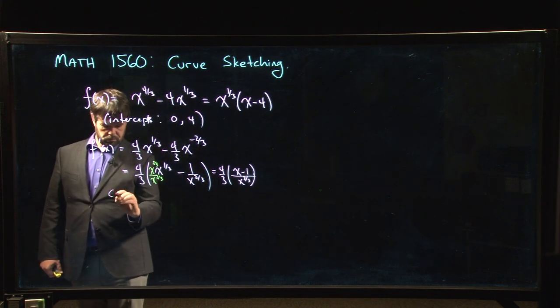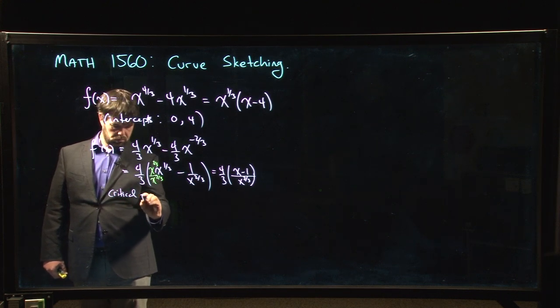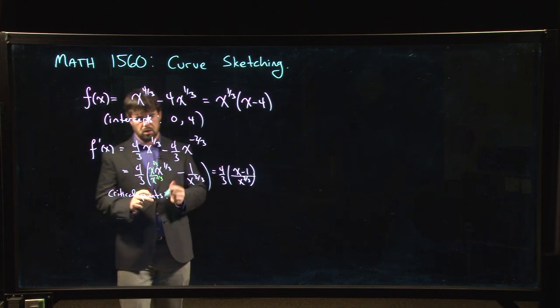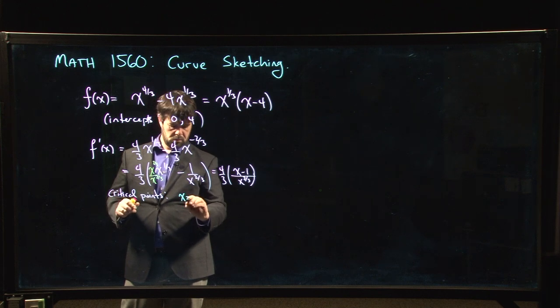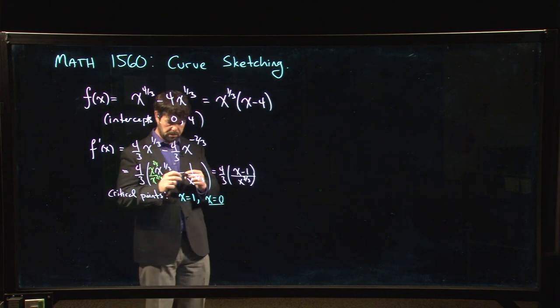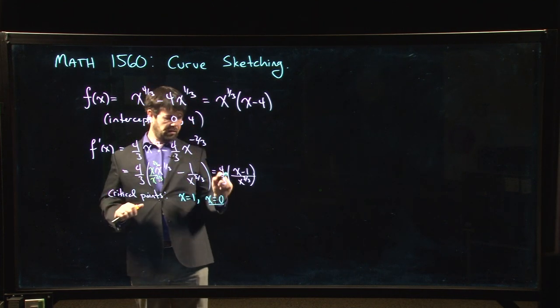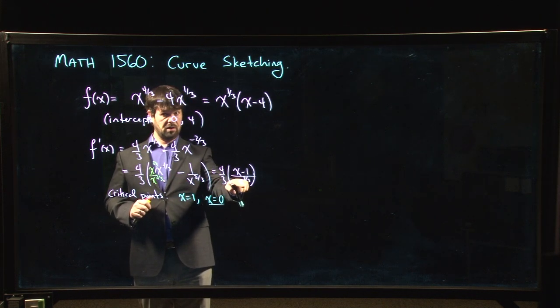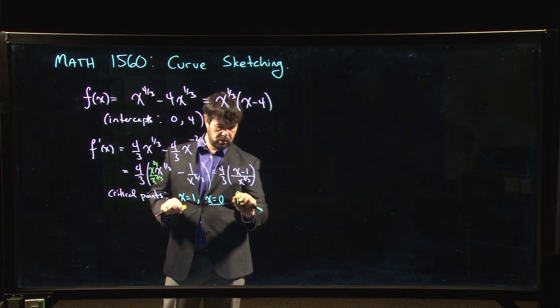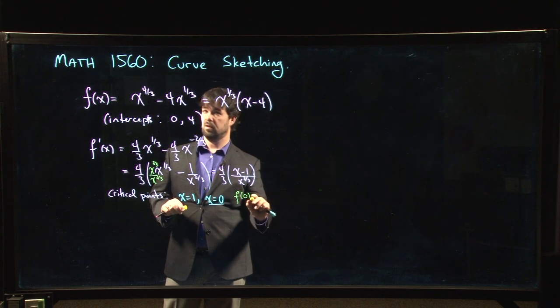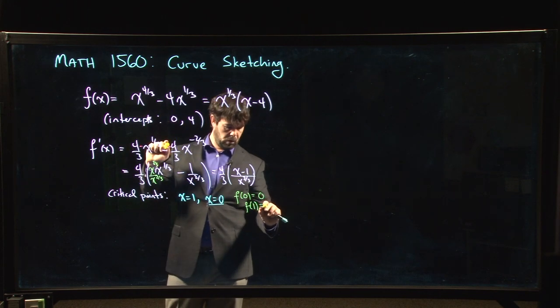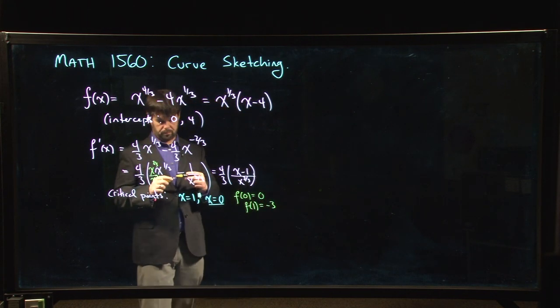Critical points. What are they going to be? Well, the x values are going to be x equals 1 and x equals 0, because 0 is in the domain of my original function and we can see that the derivative is undefined at 0. So that makes 0 a critical number and we might, while we're at it, calculate that f of 0 is 0. f of 1 is going to be 1 minus 4, it's negative 3.